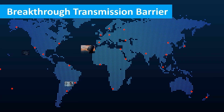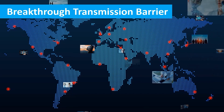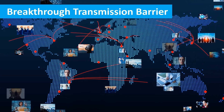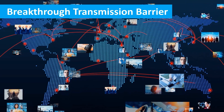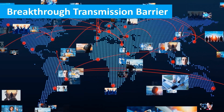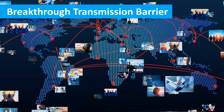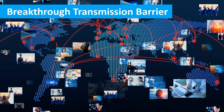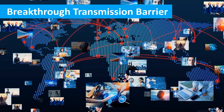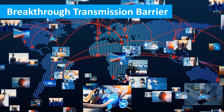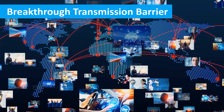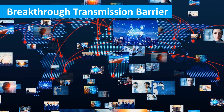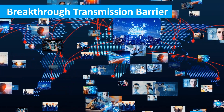AV over IP can be transmitted within buildings, between local offices, and even to facilities in other continents. It's as simple as adding network switches, using optical fiber, or routing signals over wide area networks.